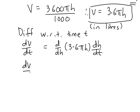So that's going to give us dV/dt is equal to 3.6 π h. We'll just differentiate to 3.6 π times dh/dt.